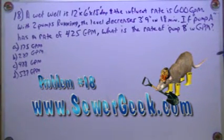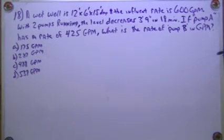Problem number 18, wastewater collection math book soargeek.com. A wet well is 12 feet by 6 feet by 15 feet deep, and the influent rate is 600 GPM. With two pumps running, the level decreases 3 feet 9 inches in 18 minutes. If pump A has a rate of 425 gallons per minute, what is the rate of pump B in GPM?